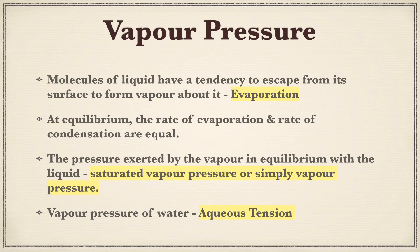Next topic is vapor pressure. We are now talking about the liquid state. We will see some important properties of the liquid state. First one is vapor pressure — we have already seen this, so this is just a revision. We will first understand what is evaporation. The molecules of liquid have a tendency to escape from its surface to form vapor, and that is said to be evaporation.